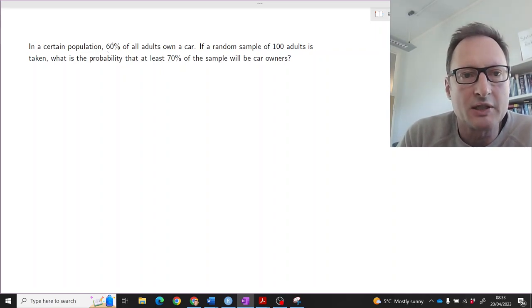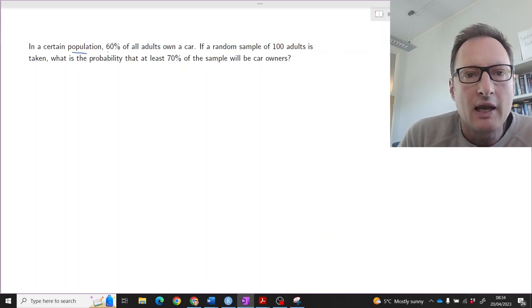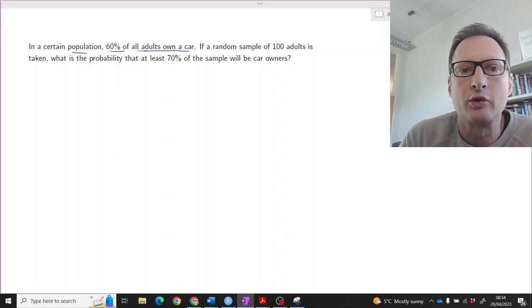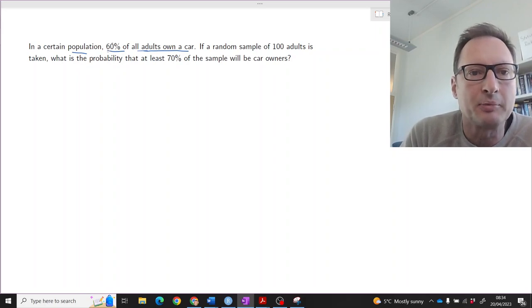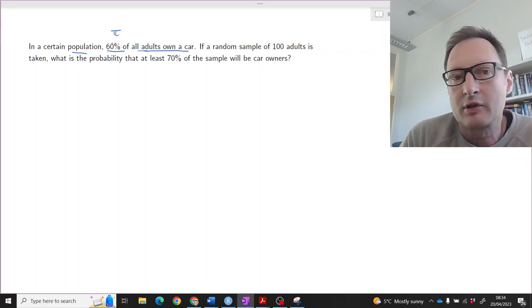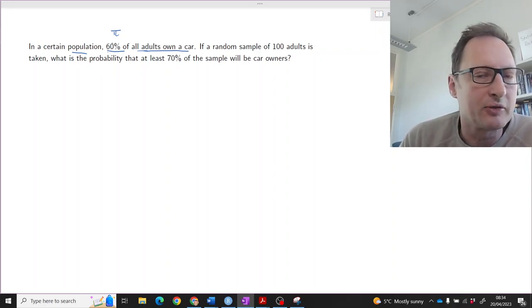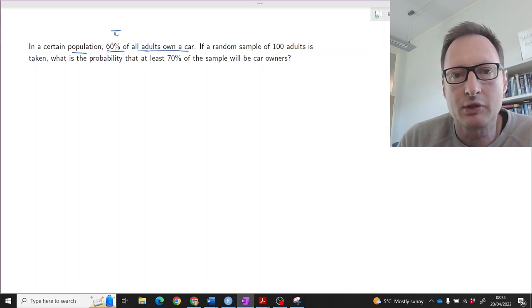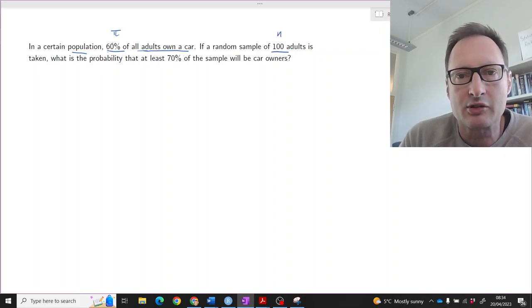This question gives us information about some population in which we know that 60% of all adults own a car. So 60% is the population proportion of car ownership. Now we are taking a sample from this population, a sample of 100 adults, so that is our sample size n. And we are asking what is the probability that at least 70% of the sample will be car owners.